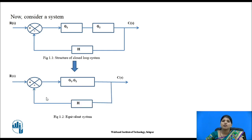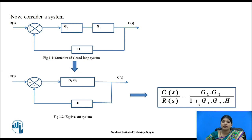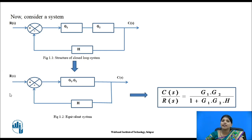The transfer functions are multiplied and then the feedback loop H is connected. The transfer function of this system is C(s) / R(s). If the sign is negative at the feedback summing point, you use a positive sign in the denominator: C(s) / R(s) = G1·G2 / (1 + G1·G2·H). This is how you eliminate the feedback loop. If the sign is negative, you get positive in the denominator; if positive, you get negative.